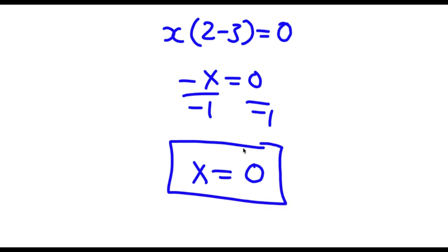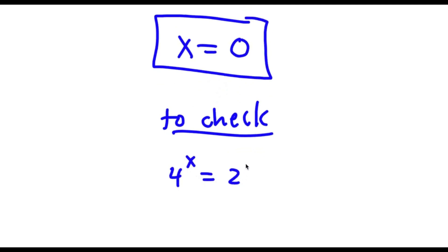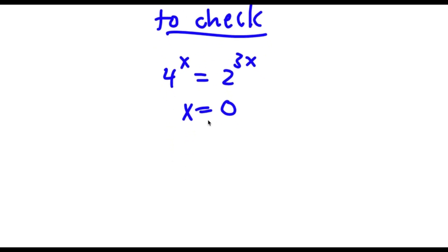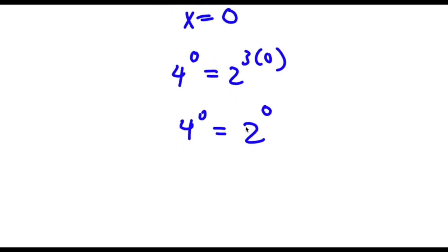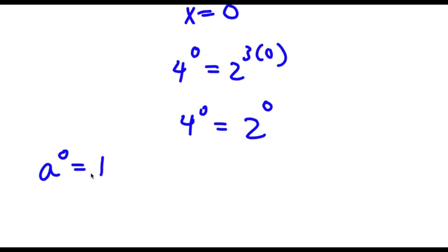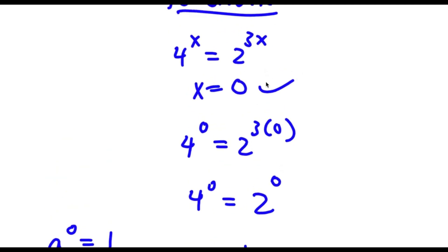So my answer is x equals 0. To check, my original equation was 4 to the power of x is equal to 2 to the power of 3x. Substituting x equals 0, I have 4 to the power of 0 is equal to 2 to the power of 3 times 0. Now 3 times 0 is 0, so I have 4 to the power of 0 is equal to 2 to the power of 0. Any number to the power of 0 is simply equal to 1, so both sides equal 1, and our solution is correct.